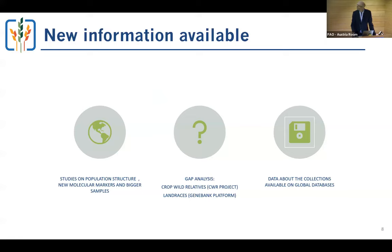This new batch of strategies has the advantage of having access to new information. There are new studies looking at the population structure of different crops, and the talk on rice is a good example of how much data has come out in the last decades. We have new molecular markers and bigger samples, and all this information is very useful when drafting the strategies — both for the background section and for the gap analysis.